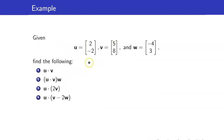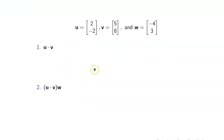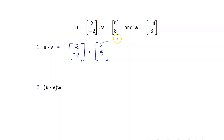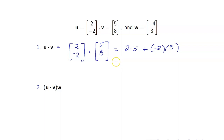Suppose we are given these values for u, v, and w. Let us compute the following. First, for u dot v, we have the vectors 2, negative 2 and 5, 8. We simply multiply the components. So that's 2 times 5 plus negative 2 times 8. This is equal to 10 minus 16, which is negative 6.